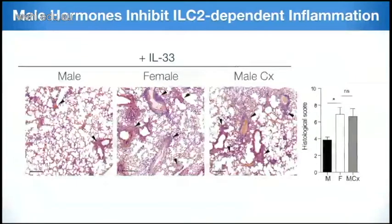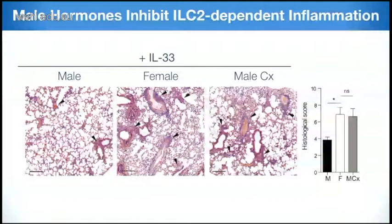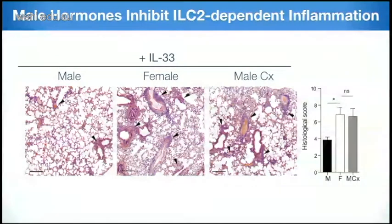This has a direct consequence on lung inflammation. Looking at histology, while males seem to be somewhat protected, there is a massive immune infiltration in females, and the same infiltration is seen when males are castrated. This really links testosterone to the type 2 immune susceptibility of females.